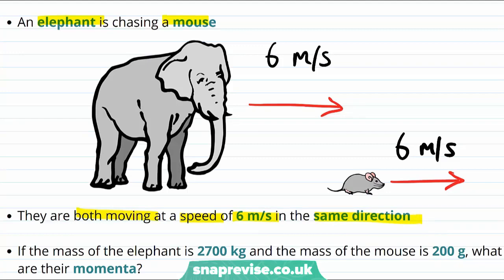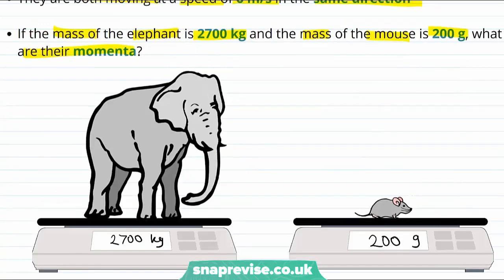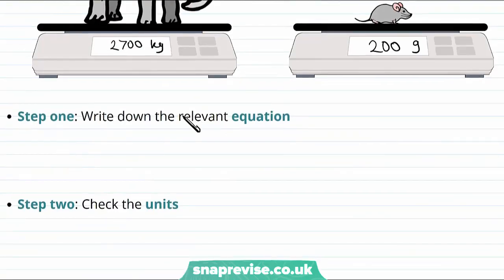And imagine they are both moving at the same speed of 6 meters per second and in the same direction. So they're both moving at the same speed. But if the mass of the elephant is 2,700 kilograms and the mass of the mouse is 200 grams, what are their momenta? Well, our first step, as always, is going to be to write down the relevant equation.